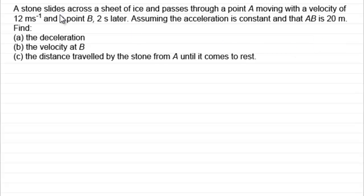what I've got is motion on a horizontal plane. So what we've got here is a stone slides across a sheet of ice and passes through a point A, moving with a velocity of 12 meters per second. And it passes also through a point B two seconds later. Assuming that the acceleration is constant and that the distance AB is 20 meters, find the deceleration, the velocity at B and the distance travelled by the stone from A until it comes to rest.